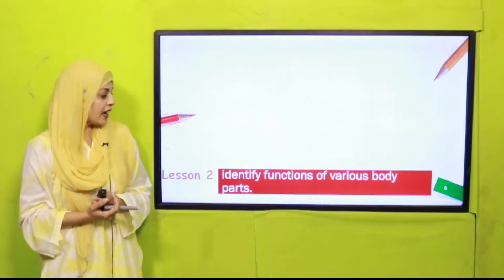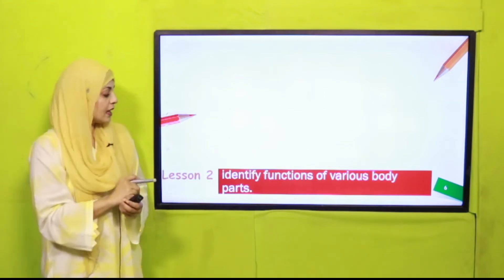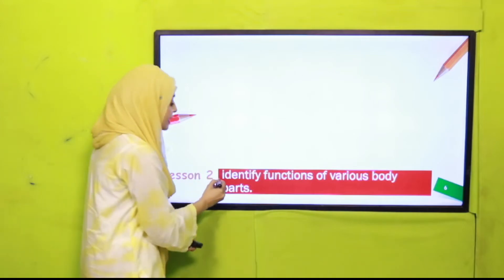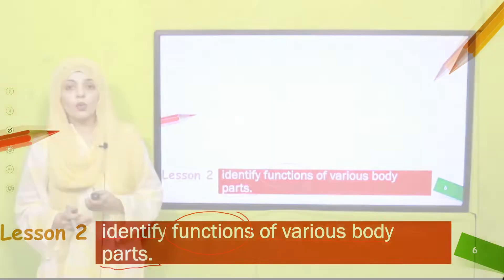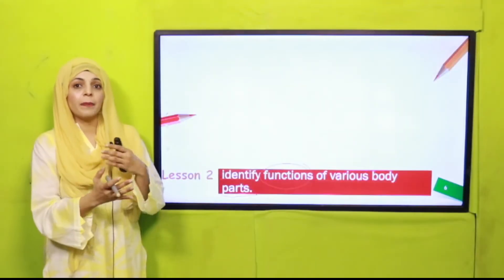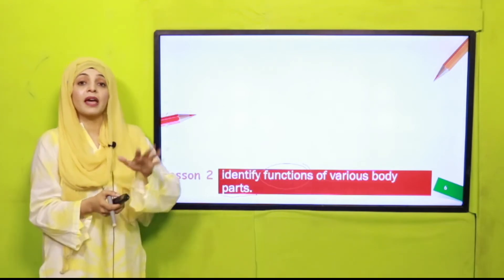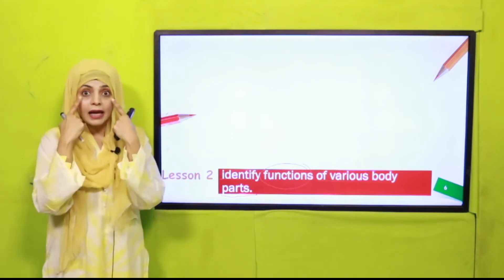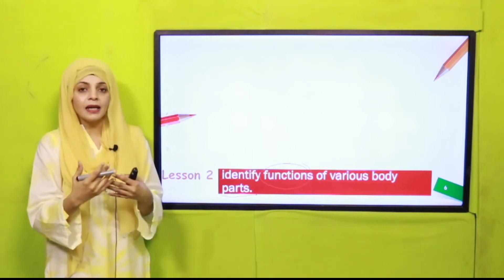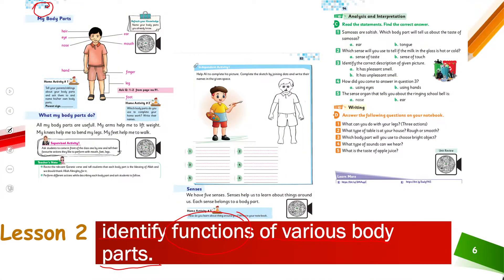In Lesson Number Two, since you have already named the different body parts in Lesson One, you will now be able to identify the functions of various body parts — what your hands do, what your nose does, what your eyes do. The pages included are page number 82, page number 83, and the practice page is page number 94.